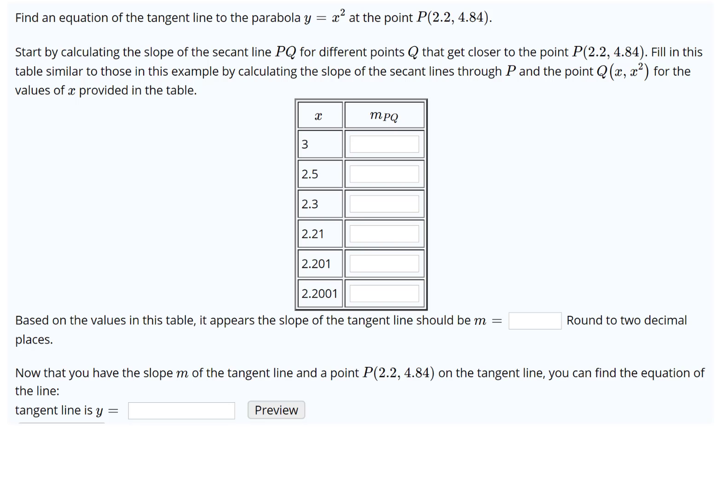So we want to find an equation of the tangent line to the parabola y equals x squared at the point (2.2, 4.84). To do this, we're going to start by calculating the slope of the secant line PQ for different points Q getting closer and closer to P. We're going to fill in this table as we do that.